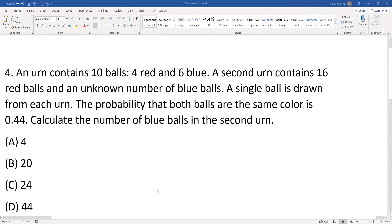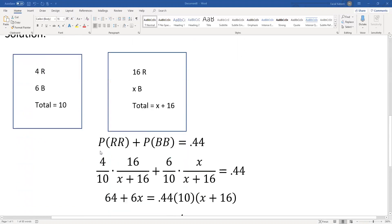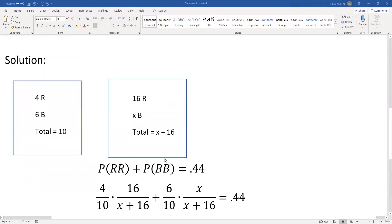And we are given the probability that both are the same color, which is 0.44. So they can be the same color if they are both red or both blue. So that means probability red red plus probability blue blue would be 0.44.